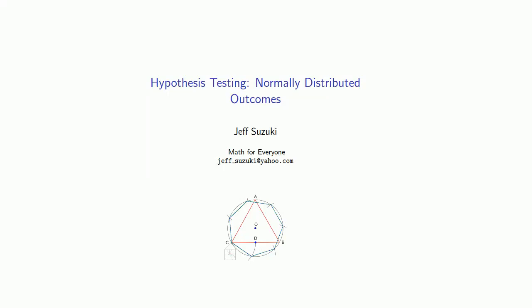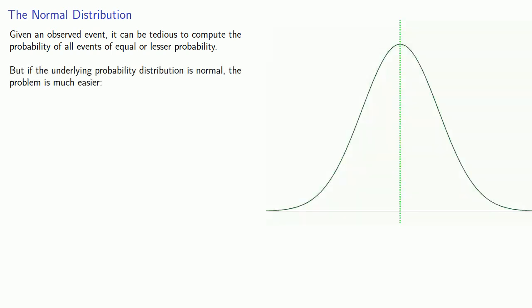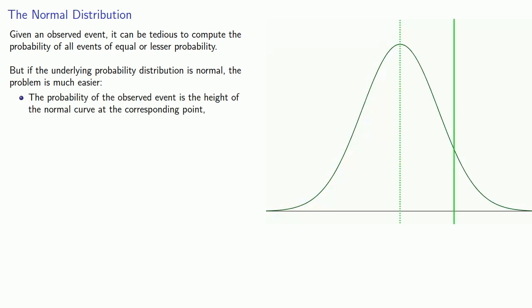One of the more important situations where we test our hypothesis is when we have normally distributed outcomes. Given an observed event, it can be very tedious to compute the probability of all events of equal or lesser probability. But if the underlying probability distribution is normal, the problem is much easier, because the probability of the observed event is the height of the normal curve at the corresponding point, and all lower probability events are further away from the mean on both sides.